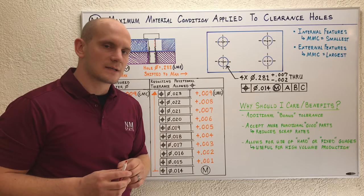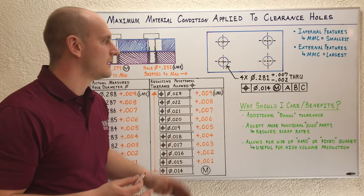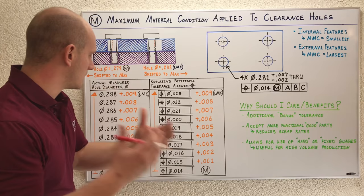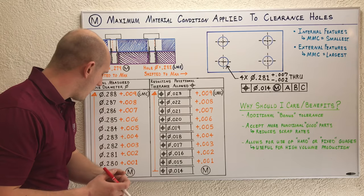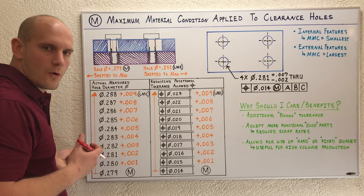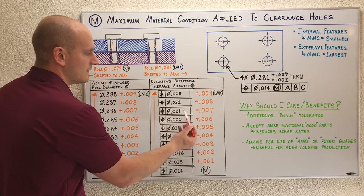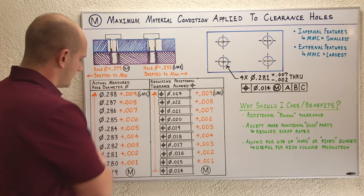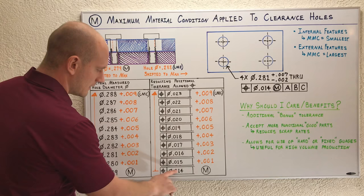The next benefit—you actually accept more functionally good parts thereby reducing your scrap rate if you use MMC with clearance holes. Here's a good situation to explain that. Say this part was sent off, drilled, and that hole came in at 281. Then the inspector measured the hole location and it came in at this maximum deviation of say 21. Well, if you don't use MMC, they're stuck. They have to reject that part because that violates the initial 14 thousandths, this hard fixed value you'd be forced to follow if you didn't use MMC.